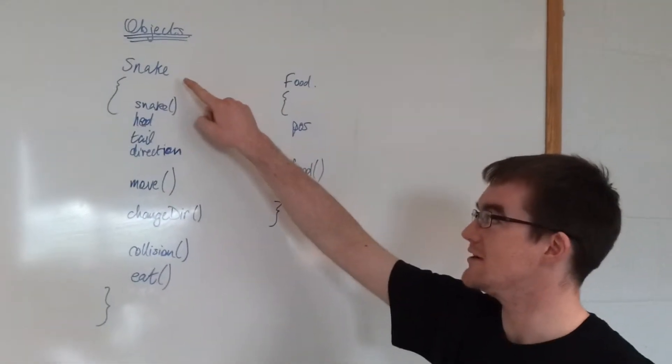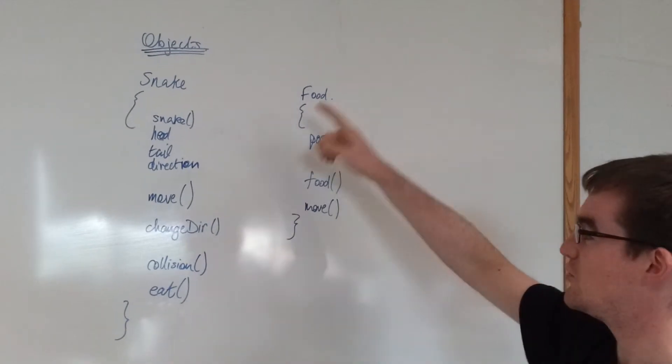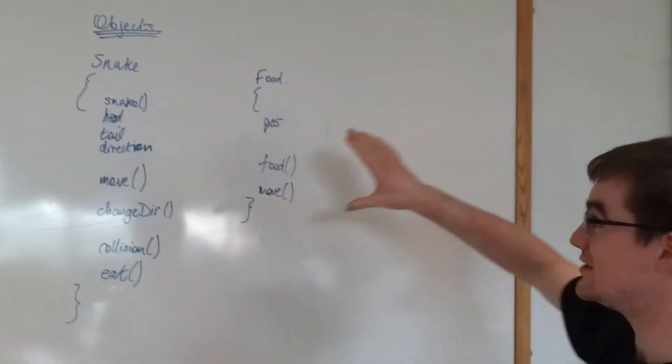So we're laying out our snake object and our food object. We've come up with the minimum number of things we need to do.